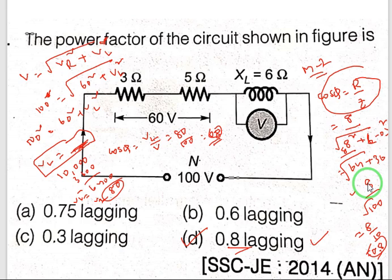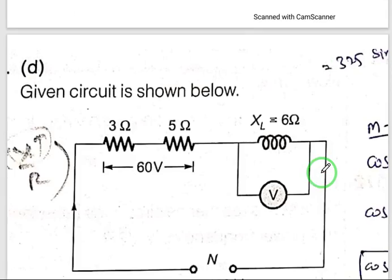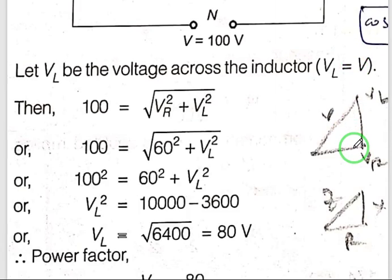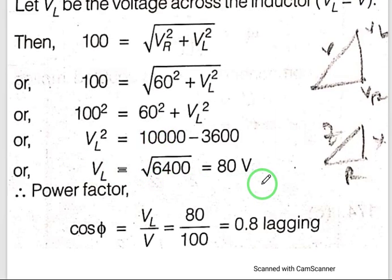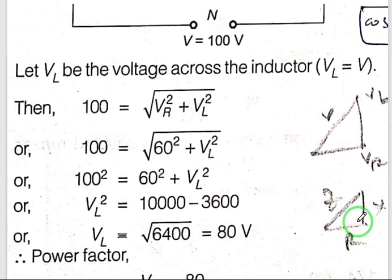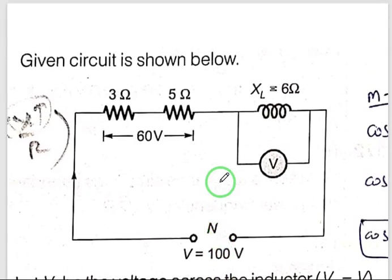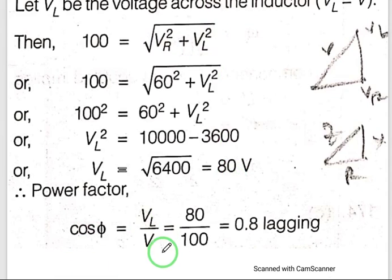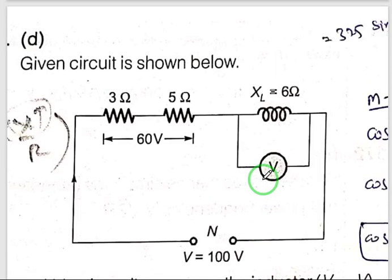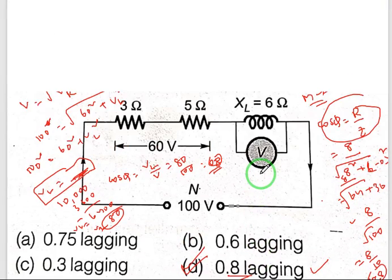0.8 lagging is the correct answer. The simple formula is cos φ equals R by Z; R equals 8, impedance equals 10, giving 0.8 lagging. The traditional method also gives 80 volts, cos φ equals VR by V equals 80 by 100 equals 0.8 lagging. For questions asking input voltage, substitute using the same formulas.